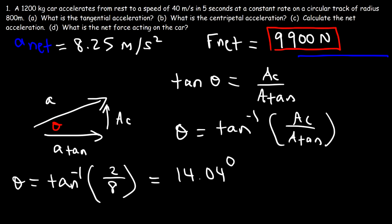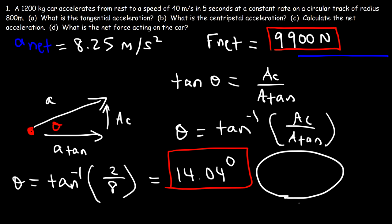That angle is 14.04 degrees above the positive x-axis at the bottom of the circle. Keep in mind this angle might be different depending on where you are on the circle, but at this position it is 14 degrees above the x-axis.